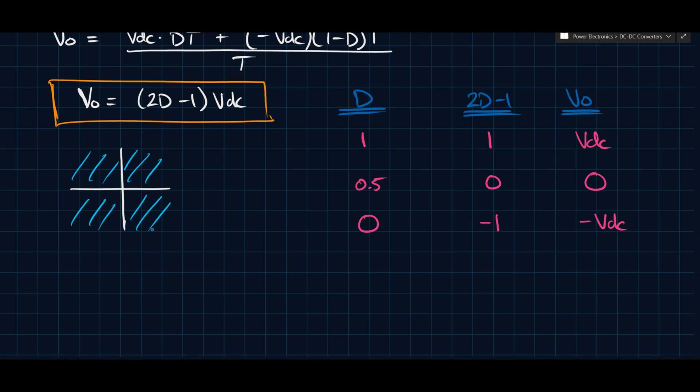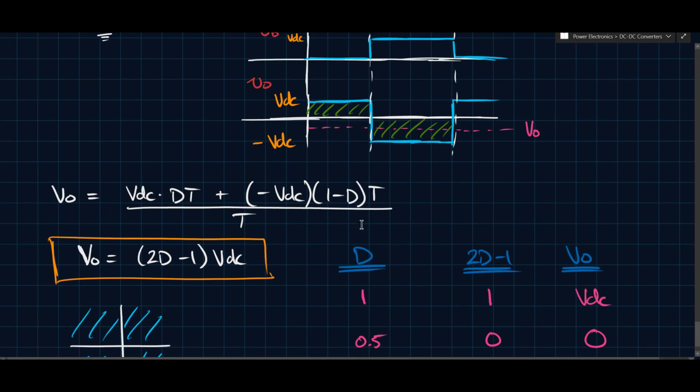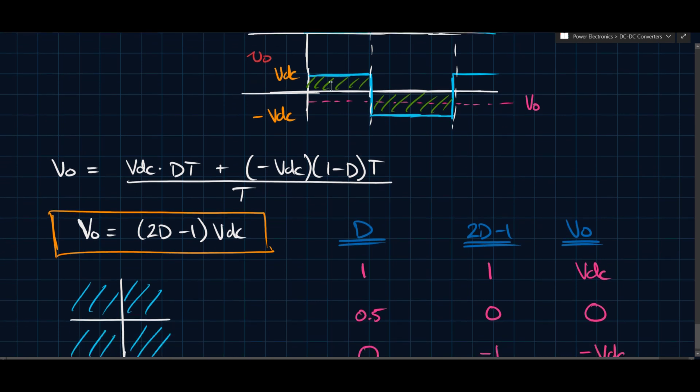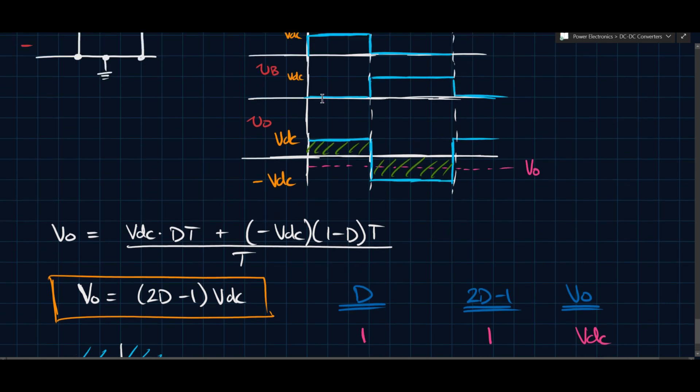And so this, in itself, is, so we see the output voltage is positive or negative depending on the value of D. Now, going back to our average here, we kind of expected this to be below zero. And we can actually, if you think about this, this is D less than 0.5.